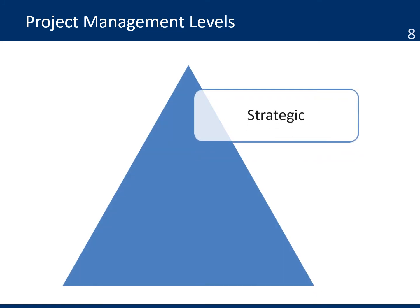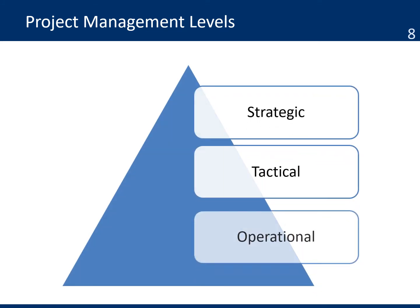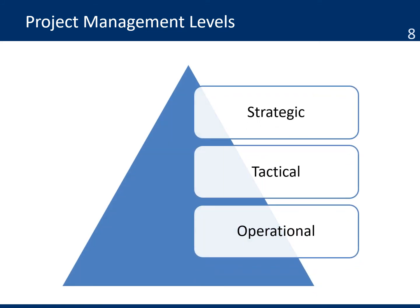These levels of management form a hierarchy in which people are ranked based on their level of responsibility, experience, and qualifications from assistants to the project director. It also delineates a process for people to be promoted and increase responsibility in the project organization, starting with operational as a project assistant, then tactical as a project manager, and strategic as a project director.